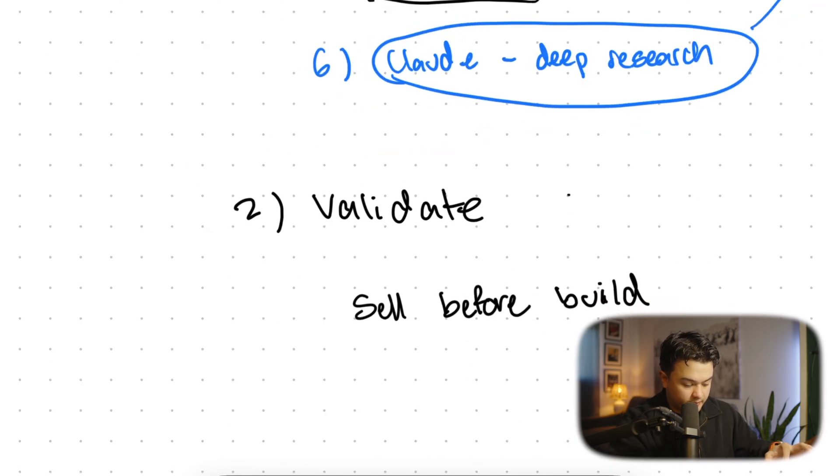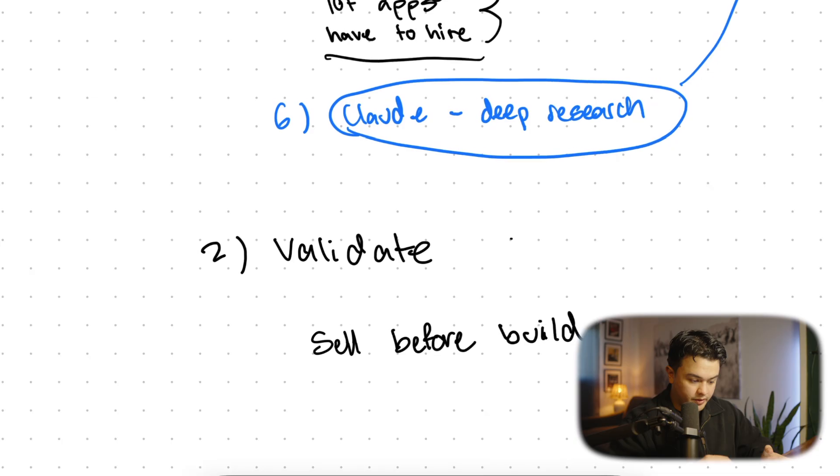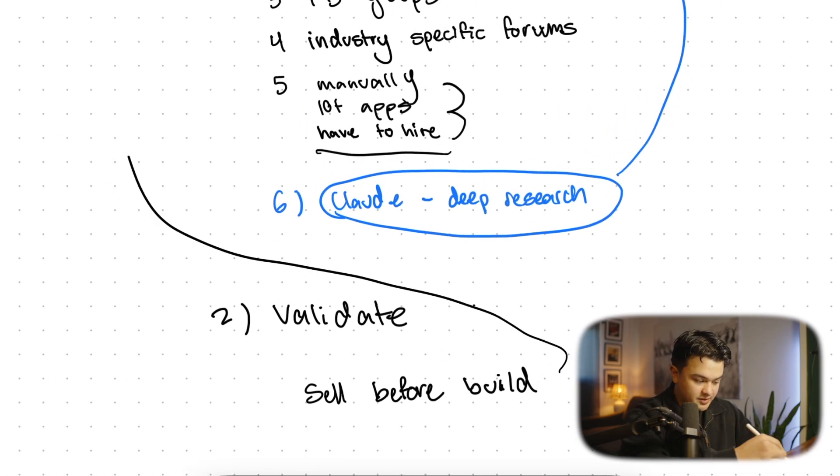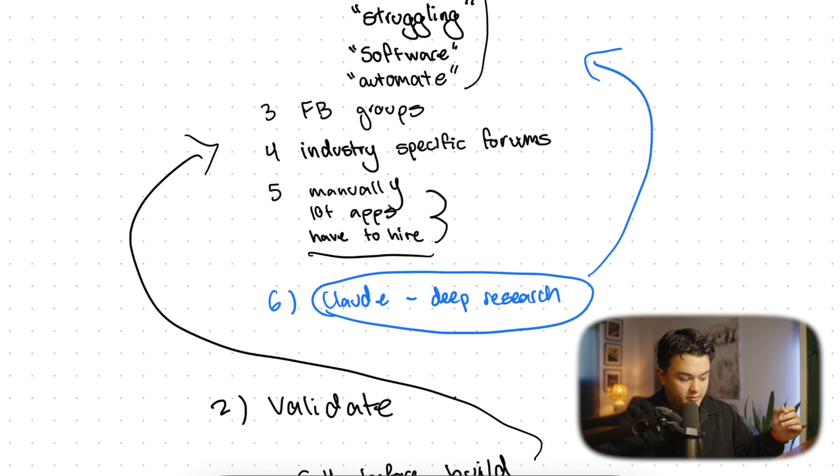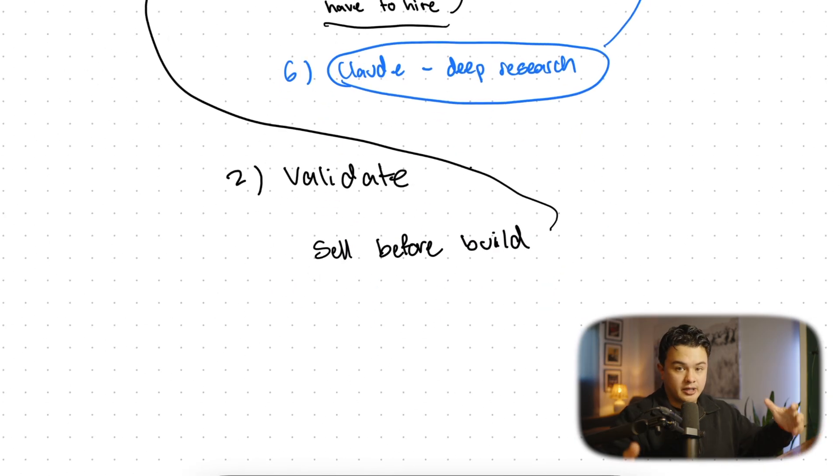We need to validate our offer. We are going to reach out to the same people that said that they're struggling with this issue via Facebook, via LinkedIn, via cold email. The same gym owner that said I have an issue automating this and there's no great software. You craft an email or a message that says I actually built out a software just for gym owners that solves this problem. You're trying to see if they resonate, if they respond, if they're interested in what you have to say.